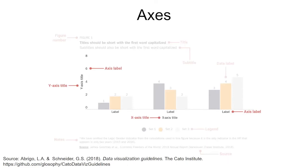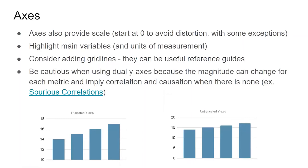Axes provide the bounds and context for the chart. They also provide scale, so always start at zero to avoid distortion, with some exceptions. Axes highlight the main variables and units of measure. To help the viewer determine a specific data point, consider adding grid lines as they can be useful reference guides — just be careful that they don't add extra clutter to the chart. Also be cautious when using dual y-axes, because the magnitude can change for each metric and imply correlation and causation when there is none. Examples of this can be seen on the spurious correlation site linked on this slide.